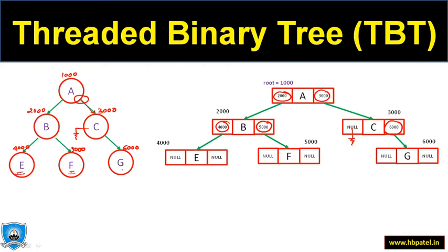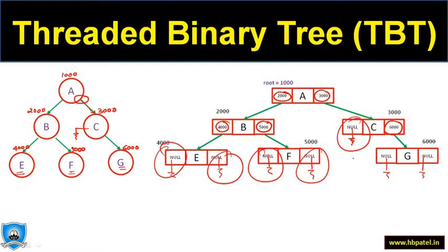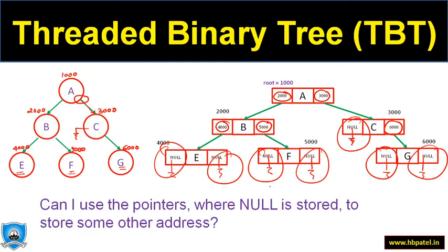For nodes E, F, and G the pointers are all null. You can count the null pointers: one, two, three, four, five, six, seven. There are so many null pointers. So the question is: can we use these pointers where null is stored? Rather than null, can we store something useful?